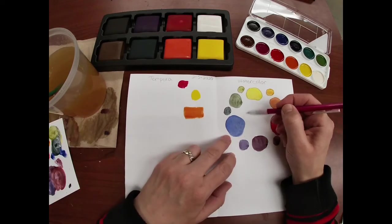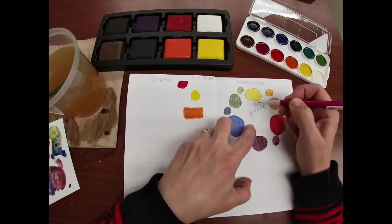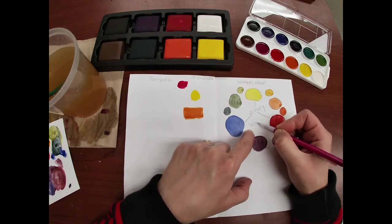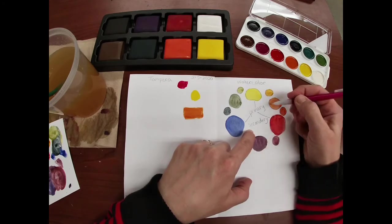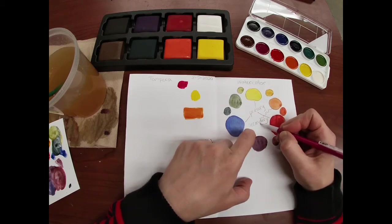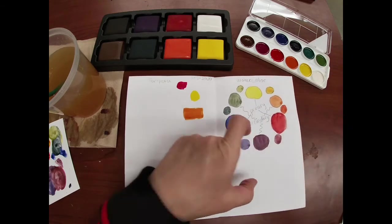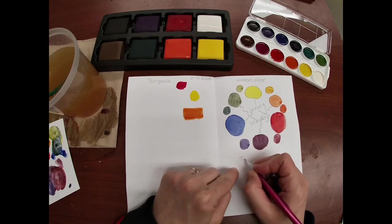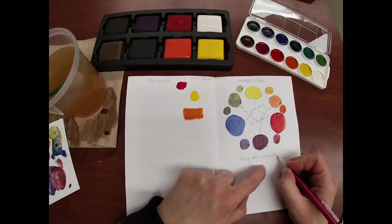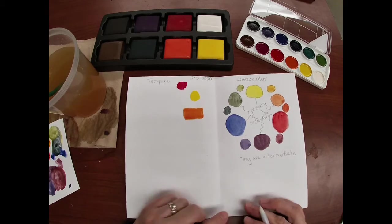Here are our primary colors, secondary, and then tiny ones are intermediate. Okay, and there's our color wheel.